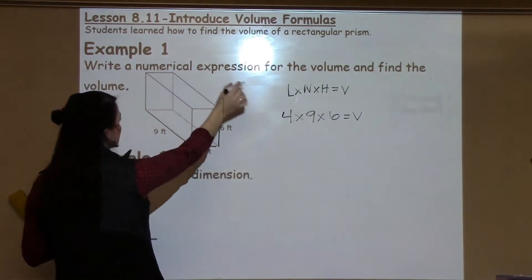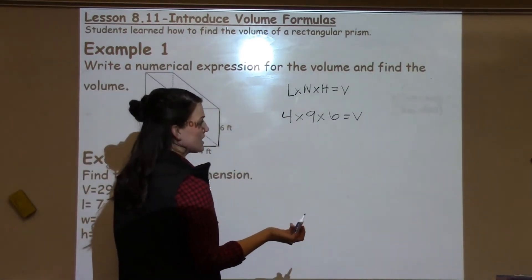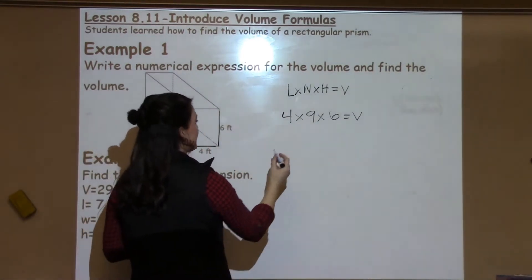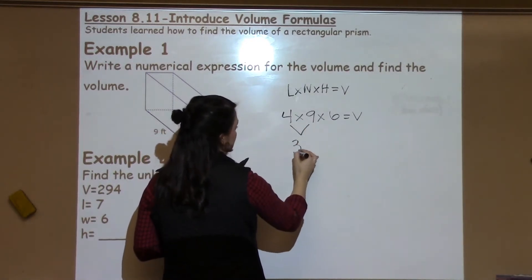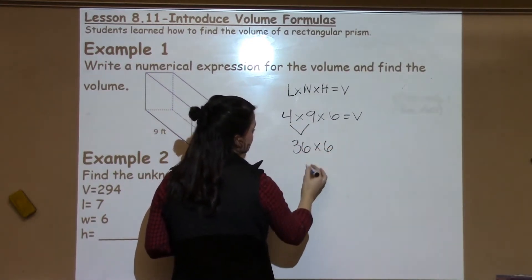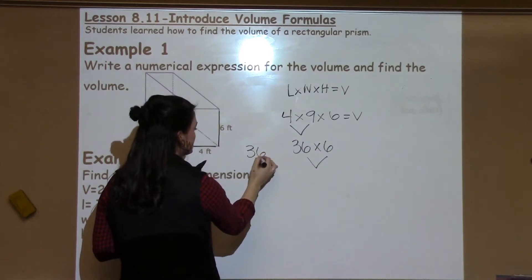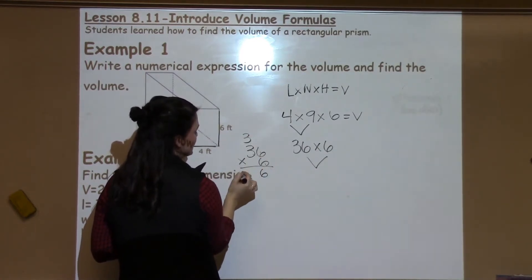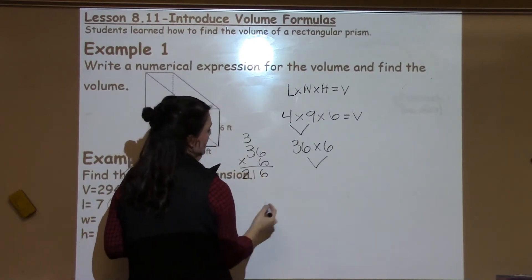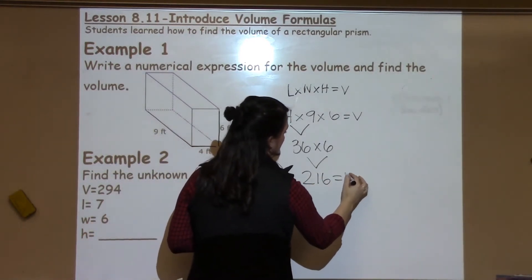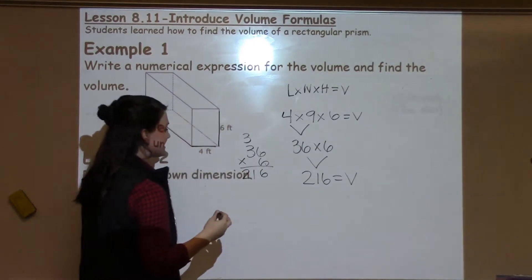So this is our numerical expression, just writing out what we're going to solve. And then we need to go ahead and solve it. So 4 times 9 is 36 times 6. I'm going to have to pull that to the side and try it. 6 times 6 is 36, carry the 3. 6 times 3 is 18, plus 3 is 21. For a final answer and volume of 216.